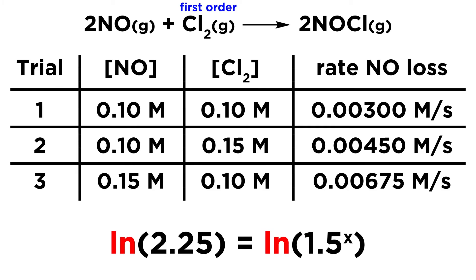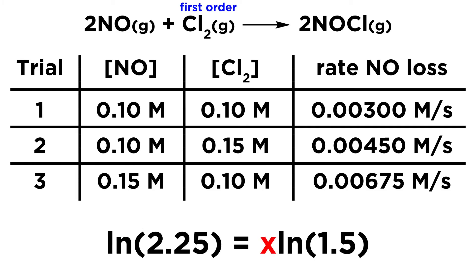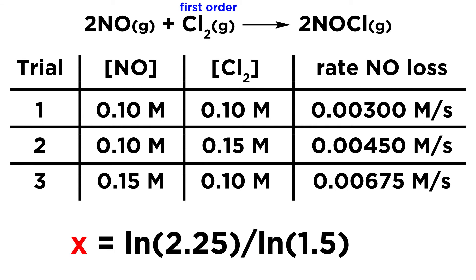So what we can do is, we can take the natural log of both sides. The reason that's useful is that due to some rules regarding logarithms, we can take that exponent, x, and bring it down as a coefficient in front of that natural log term. So now we have natural log of 2.25 equals x times the natural log of 1.5. Now, to solve for x, we divide both sides by the natural log of 1.5, and then we just plug that into the calculator, and we get 2.